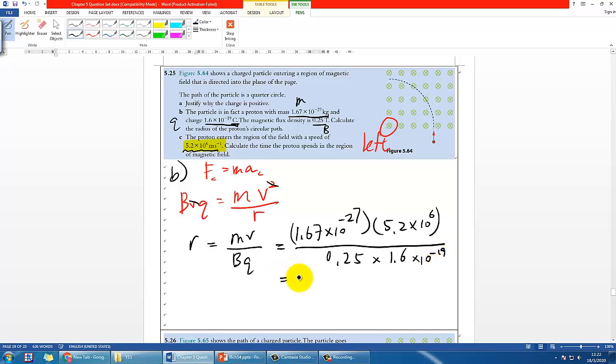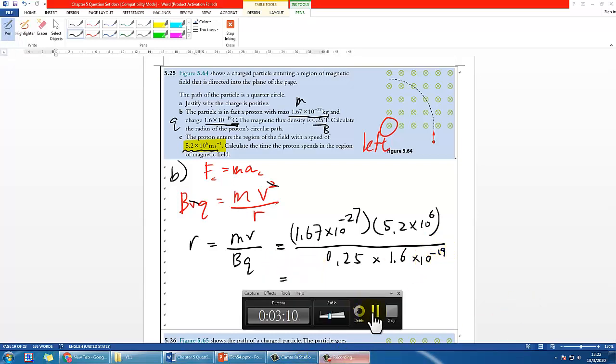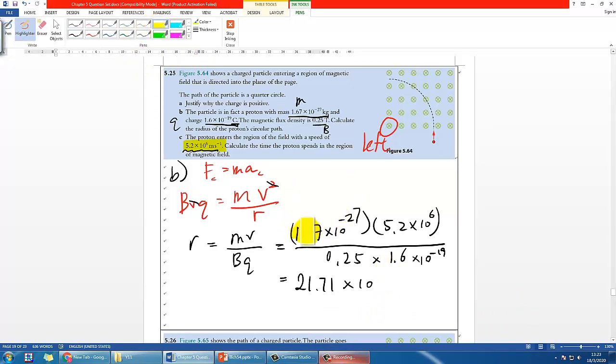So in this case, you just have to press the calculator. That's what I usually do. I will firstly calculate the numbers without the order of magnitude, which I get 21.71, and then I would deal with the order of magnitude by simply doing negative 27 plus 6, and then plus 19. So I get negative 12 here, and then you can further make it nicer that you can change it to 2.171 times 10 to the power of negative 11, in this case. And then that is in meters.